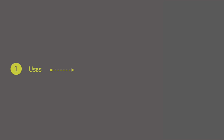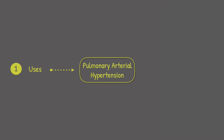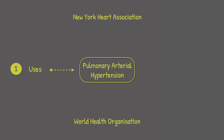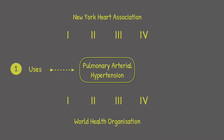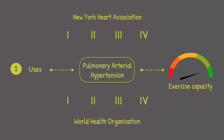Let's jump into the uses. Epoprostenol can be given to treat pulmonary arterial hypertension, where elevated blood pressure exists on the pulmonary artery. There is a functional classification for pulmonary arterial hypertension, classified by the New York Heart Association and World Health Organization from class 1 to class 4, where 1 is mild and 4 is severe. Epoprostenol can be given to patients in class 3 and class 4.